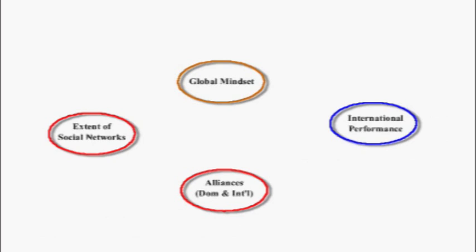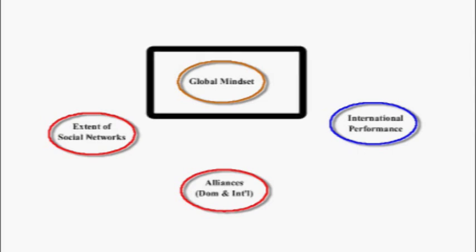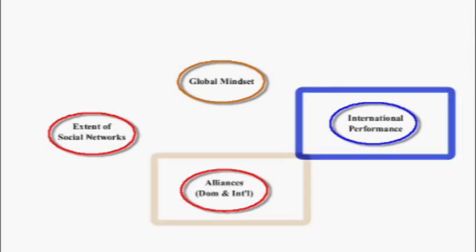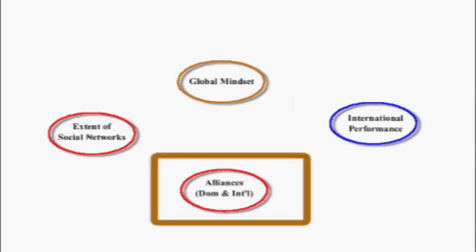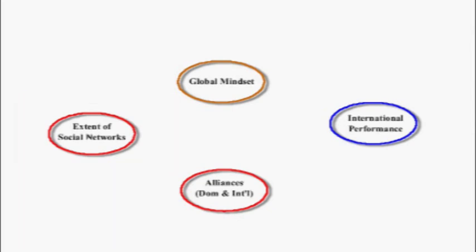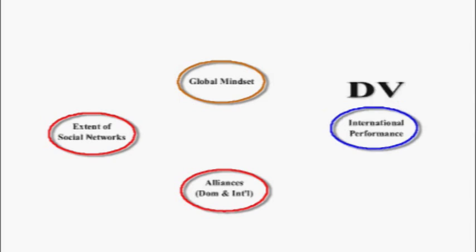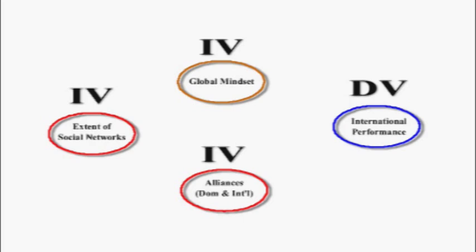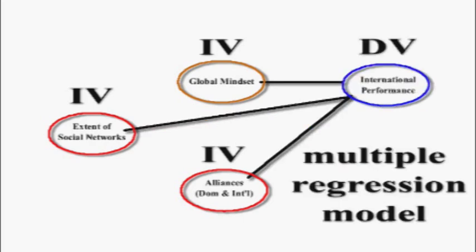In this basic multiple regression model we have four variables: global mindset, international performance, alliances (both domestic and international), and the extent of social networks. We're trying to figure out which of these variables influences the international performance variable, making that our DV and the other variables IVs. We'll use a multiple regression model to see how strongly these IVs influence the DV, or what percentage of the variance in the DV can be explained by our IVs.